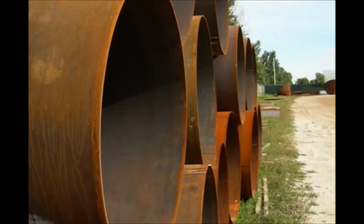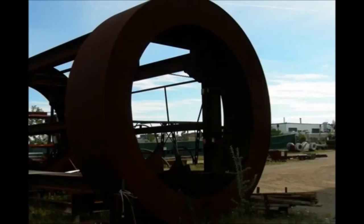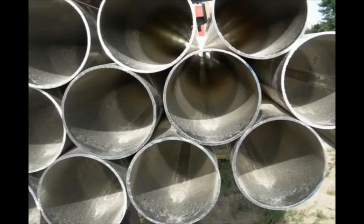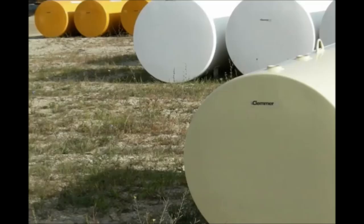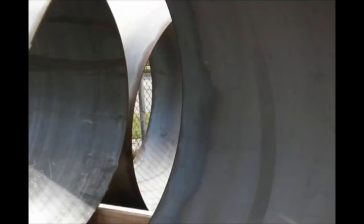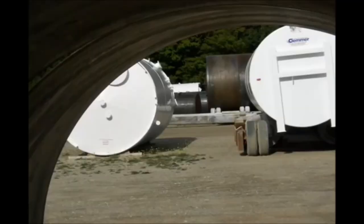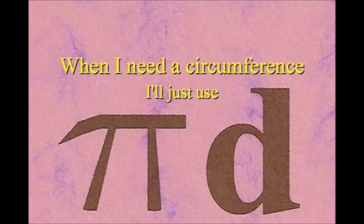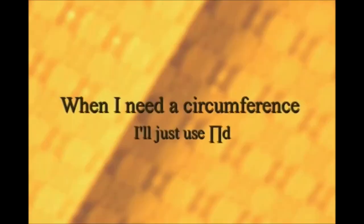Here is a circle, it knows how to get around. It has a radius from center to rim. And its diameter's a line that goes from side to side while passing through the center, now isn't that simple. Pi r squared sounds like area to me, when I need a circumference, I'll just use pi d.